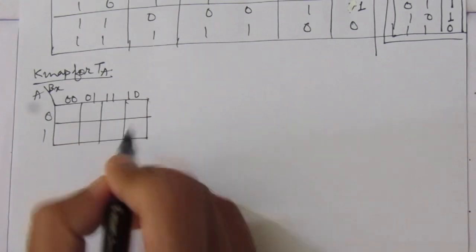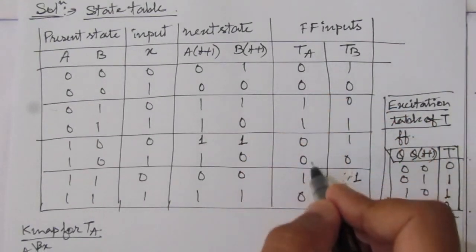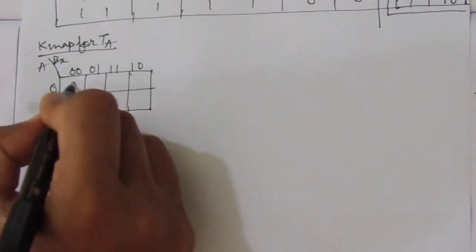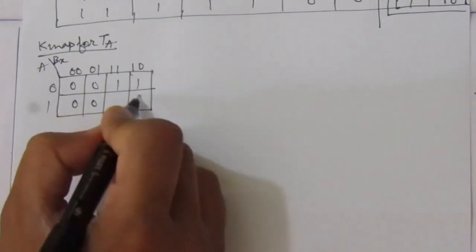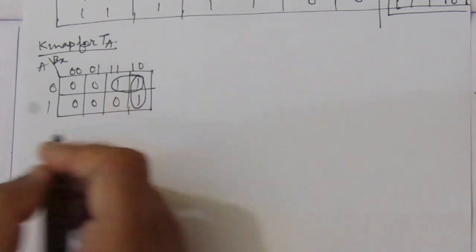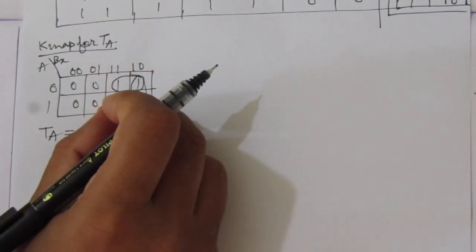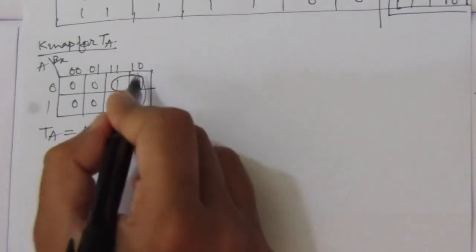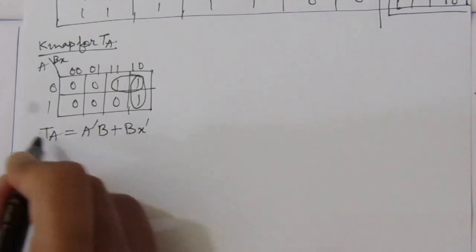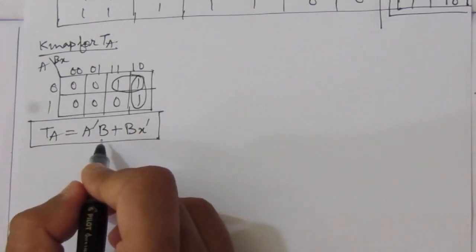Now we make the K-map for TA. We will have a three-variable map with inputs A, B, and X, where X is the input and A, B are the present state. Filling in the TA values: 0, 0, 1, 1, 0, 0, 1, 0. Grouping the terms, this gives one group and a second group. So TA equals A̅B plus BX̅.